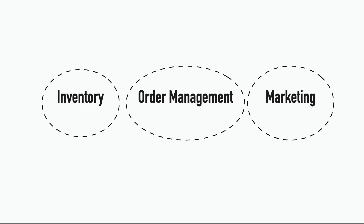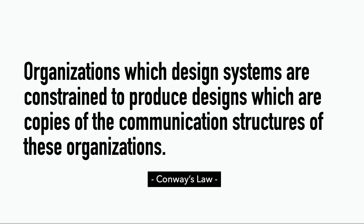But these bounded contexts can't always live in isolation. Oftentimes, they need to talk to one another, and we need to understand the relationships between these bounded contexts and the power dynamic that exists between them. Because, as Conway's law says, organizations are bound to produce designs that are copies of its communication structures — not its org chart, but its communication structures — which is basically how the different teams interact with each other.